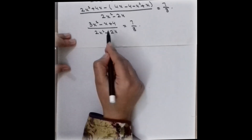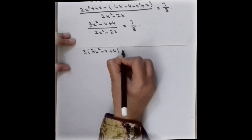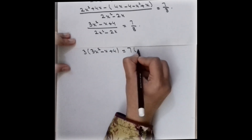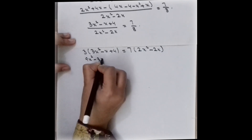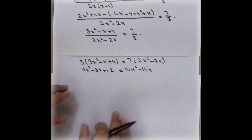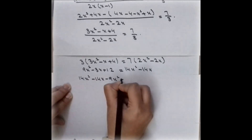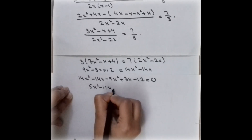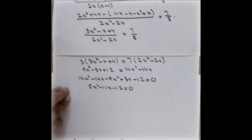After simplifying, we are left with (3x² - x + 4) / 2x = 7/3. Applying cross multiplication: 3(3x² - x + 4) = 7(2x). Multiplying gives 9x² - 3x + 12 = 14x² - 14x. Taking all terms to the right-hand side: 14x² - 14x - 9x² + 3x - 12 = 0, which simplifies to 5x² - 11x - 12 = 0, the standard form.